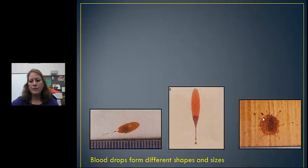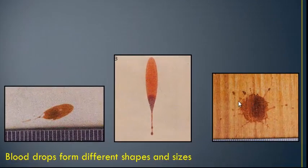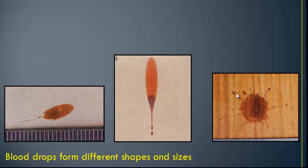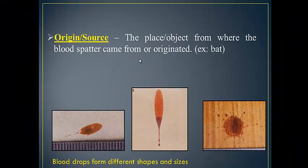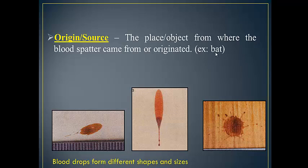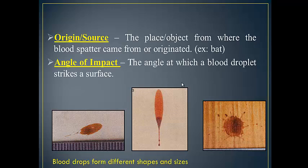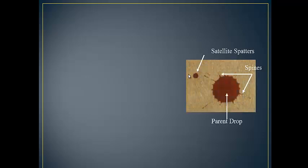We can see here, these are different types of spatters. We have a round, and these are little satellites. We'll talk about that in a second. And more elongated, and they use these elongated spots, or blood drops, to determine the direction of the flow. The origin or source is where it came from, where it originated from. An example would be like a bat if that was used as a weapon. The angle, and this is where they would use the elongated drops.